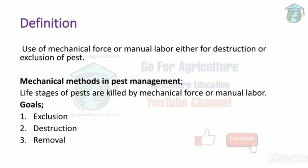The goals of mechanical control are three: exclusion, destruction, and removal. Exclusion means to keep pests out, destruction means to kill them, and removal means to remove pests from the field. These are the three goals of mechanical control.